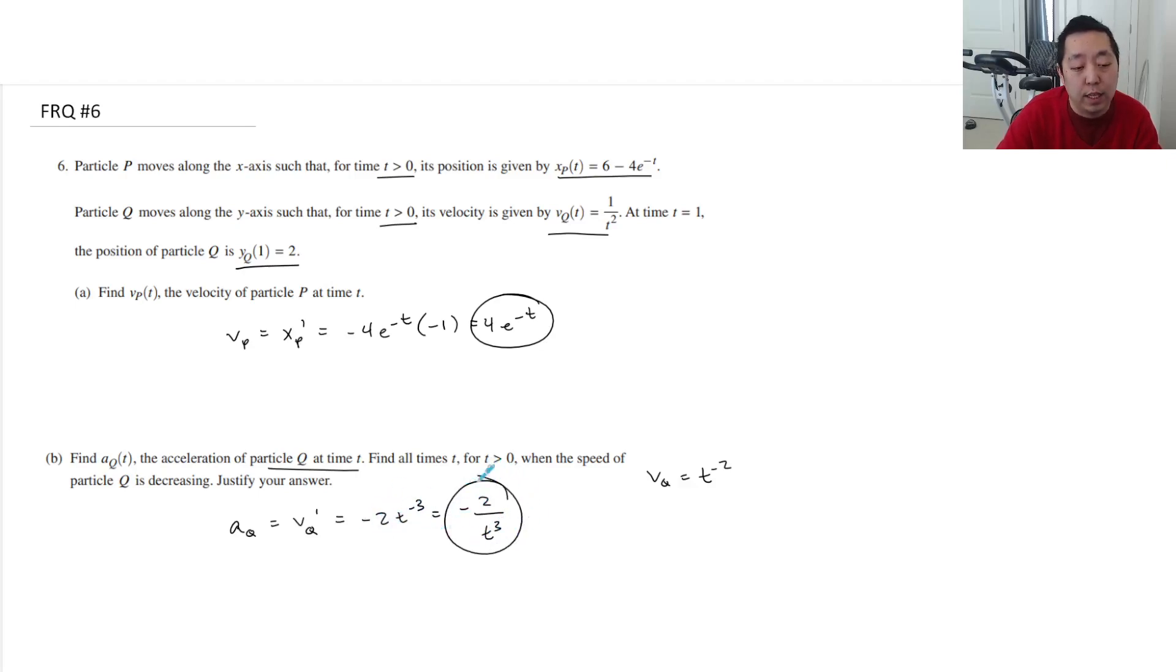You probably can leave it like that, but I prefer it this way because I'm going to do a sign analysis here in a second. So Aq, for t greater than zero, Aq is always negative. Always. So if I want to know when is the speed decreasing, that's when the velocity and the acceleration have different signs. So you know that Vq of t, which is 1 over t squared, and t is always greater than zero. Because t squared is always greater than zero. So 1 over a positive number is always positive. So Vq is always positive.